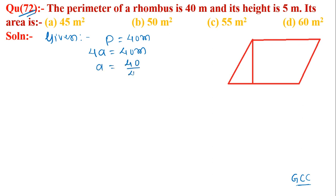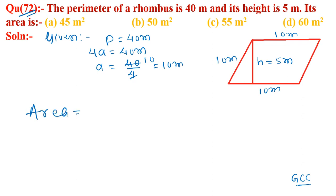That gives us 10 meters, so the side is 10 meters and the height (altitude) is 5 meters. To find the area: area equals base into altitude, which equals 10 into 5, so 50 meter square.